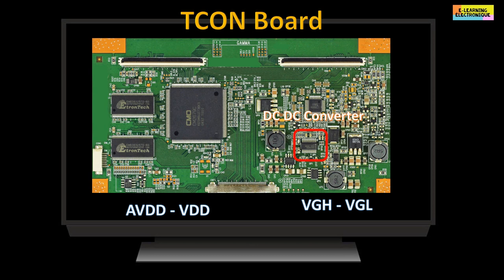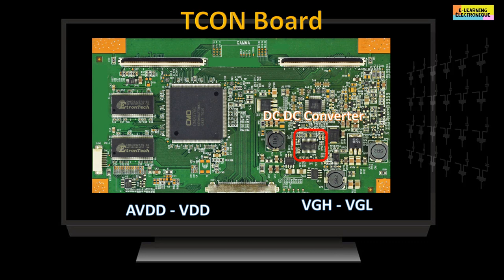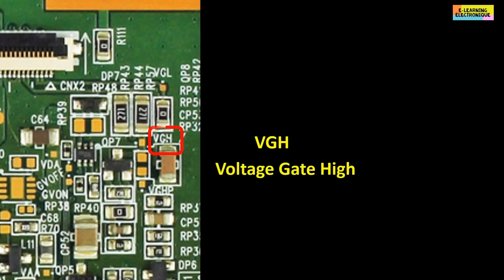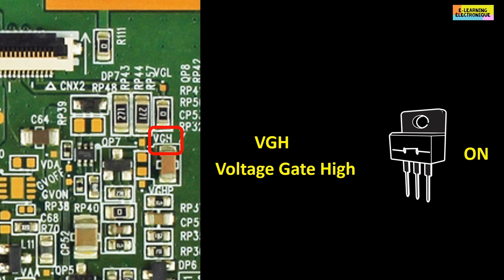The voltages VGH and VGL are necessary to control the TFT transistors that are integrated in the screen. VGH is the acronym for voltage gate high. The VGH is the on, in other words the transistor is in closing mode.